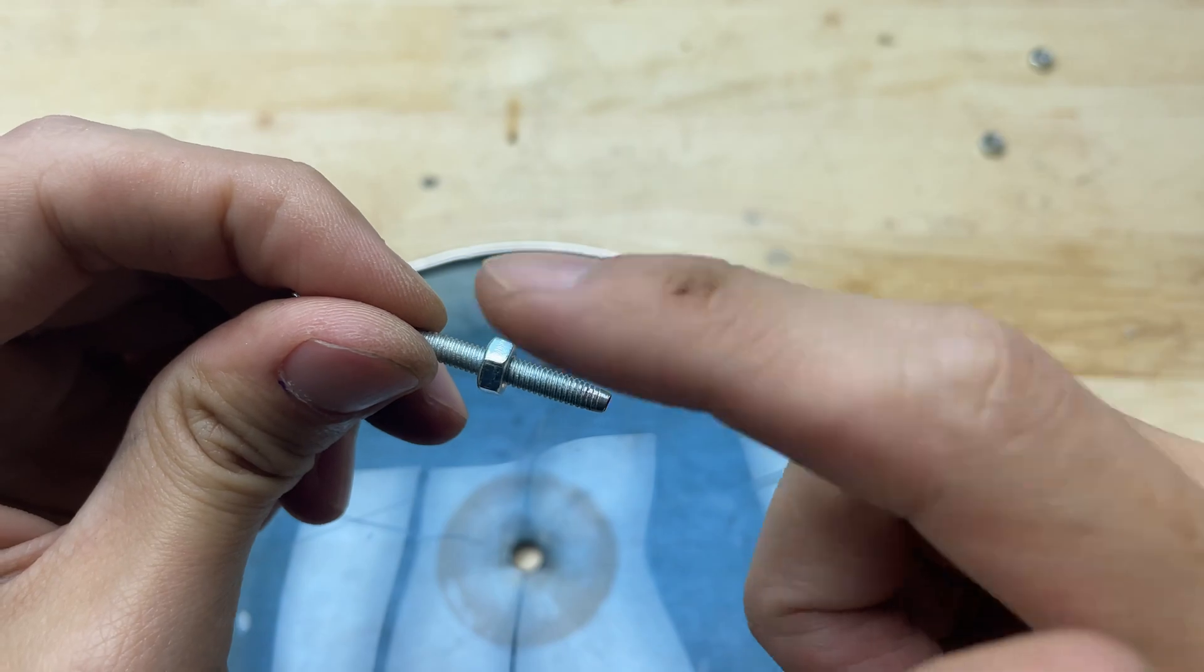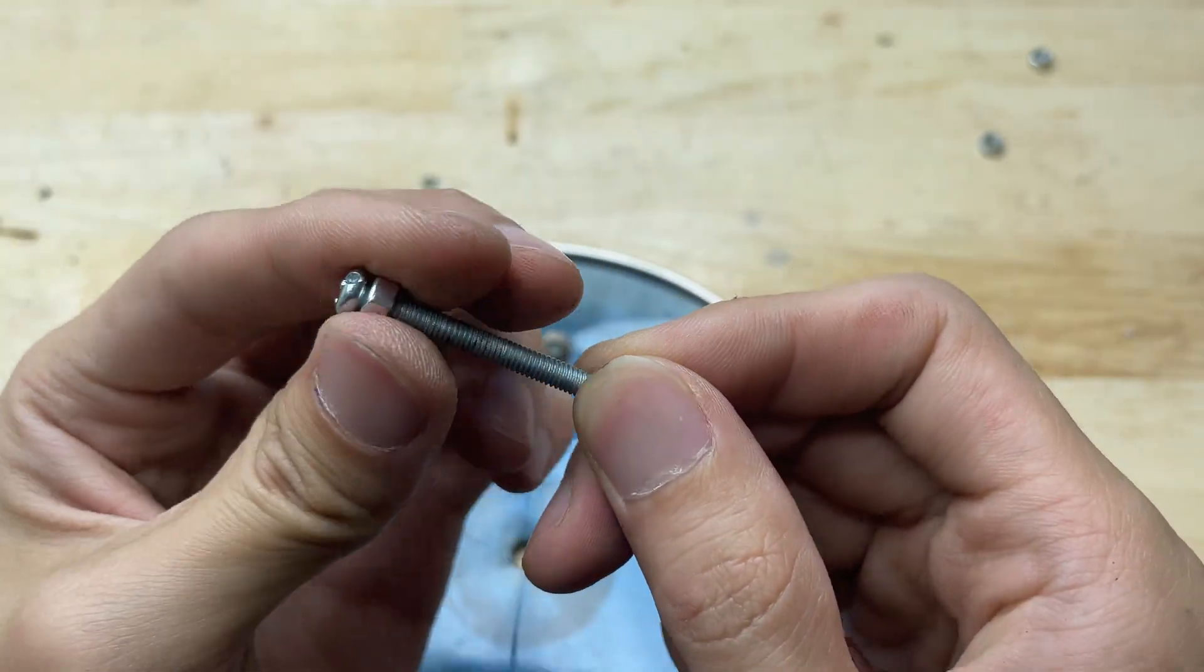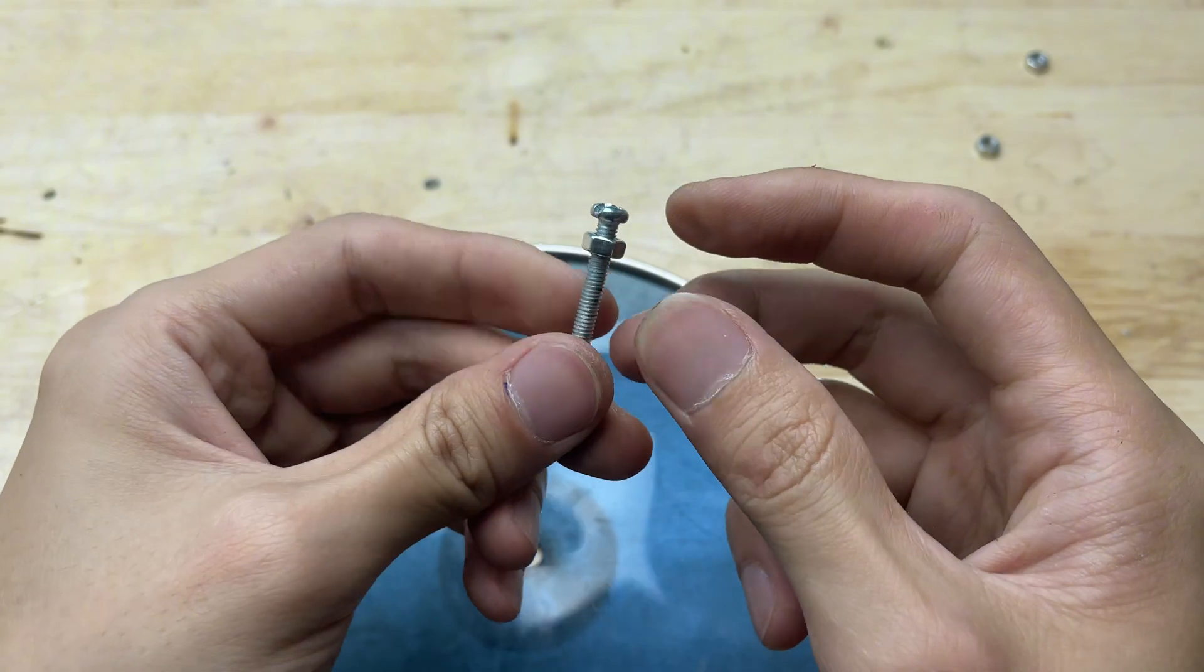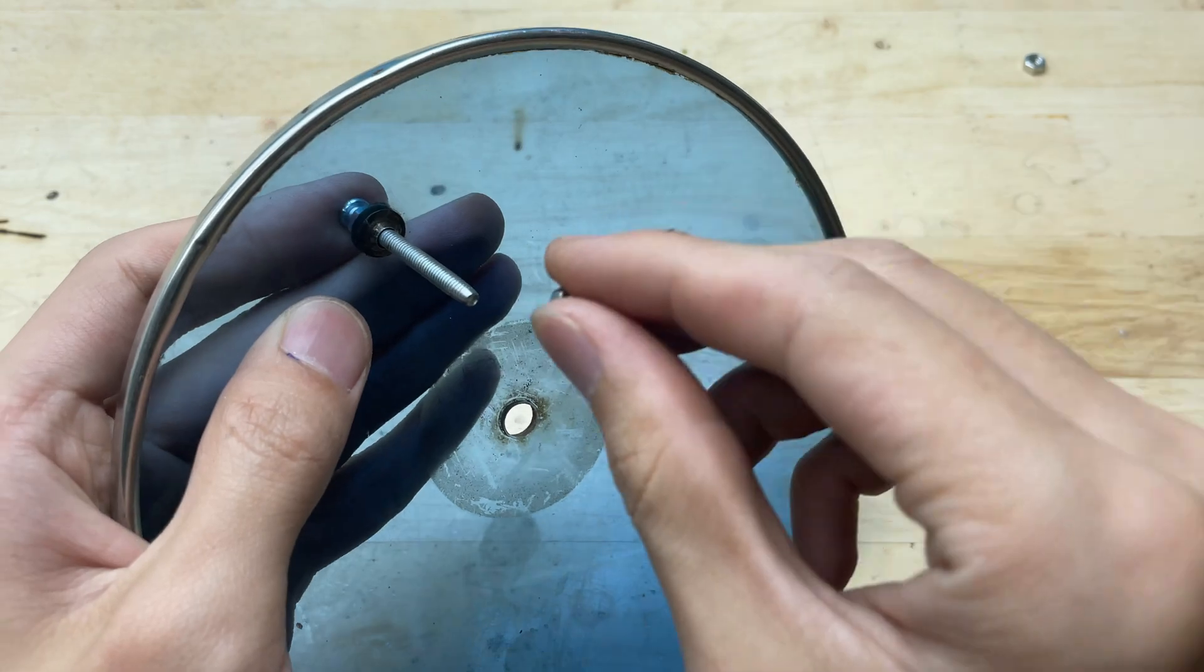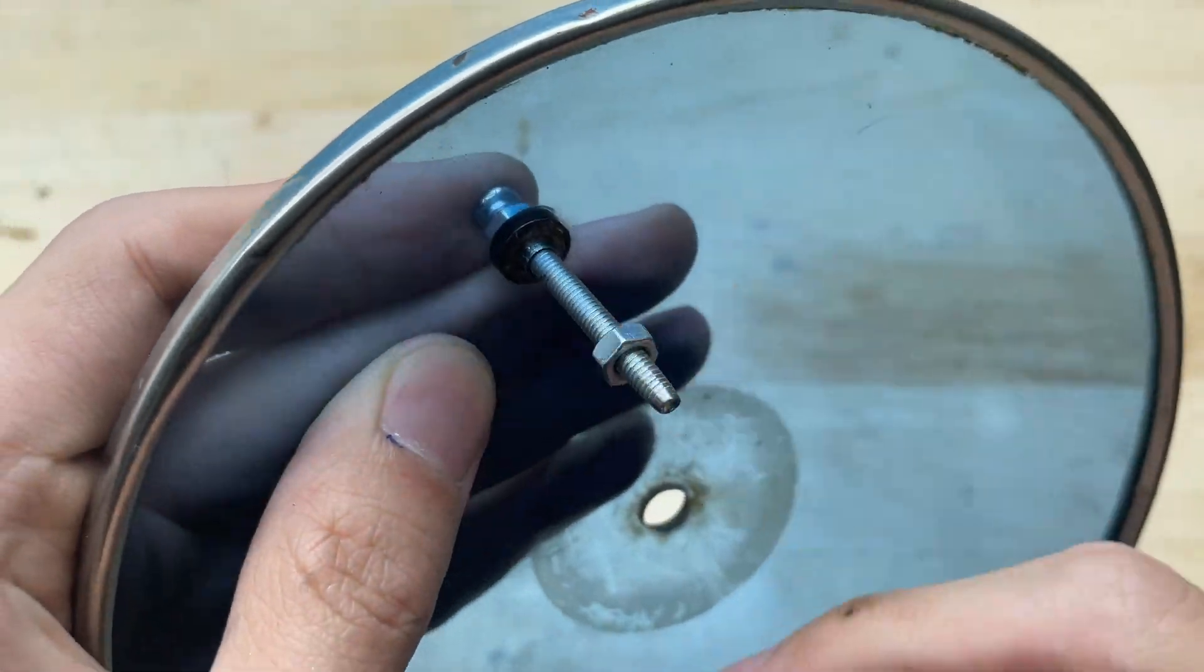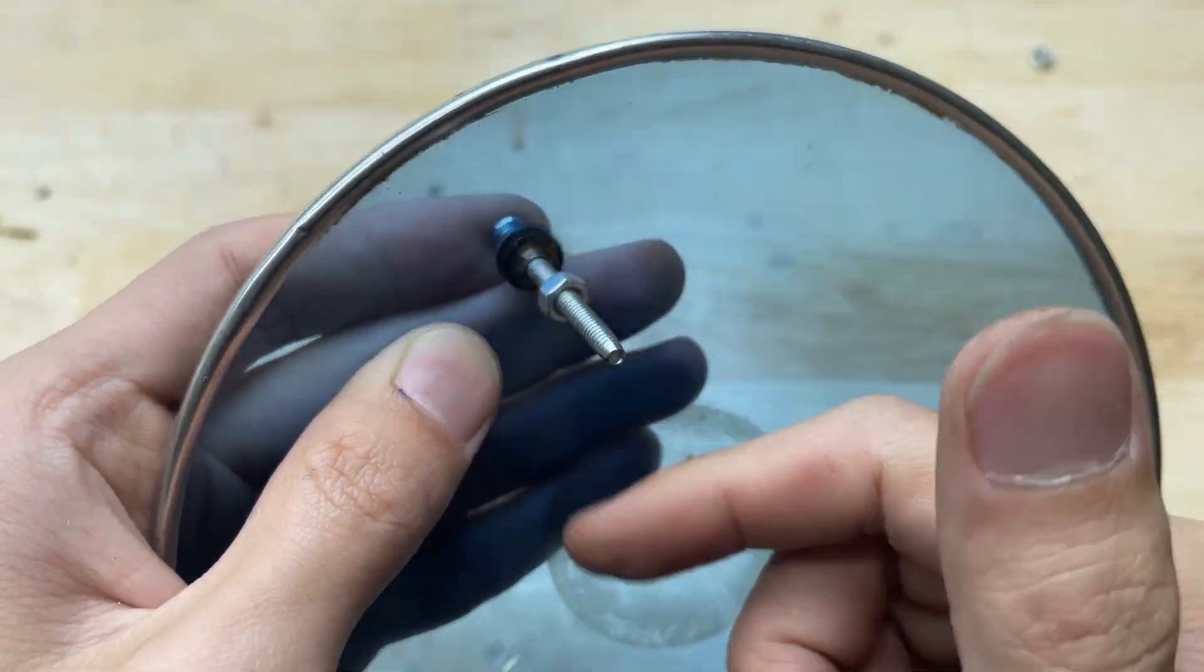Now, take a bolt, screw on a nut, but don't tighten it all the way. Leave a little gap so we can slide a wire through later. Slide it through the steam vent hole on the pot lid. Then use another nut to tighten it and hold everything firmly in place.